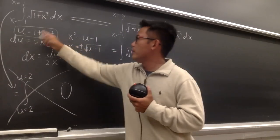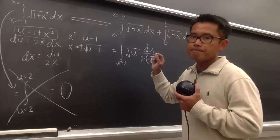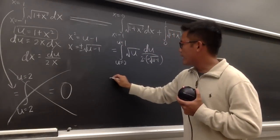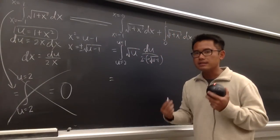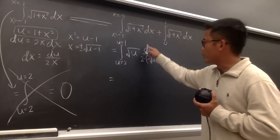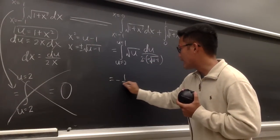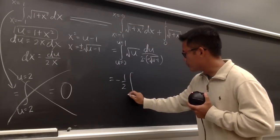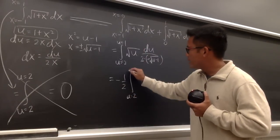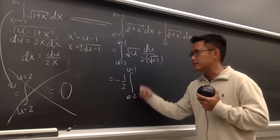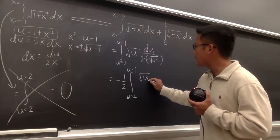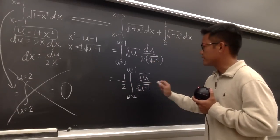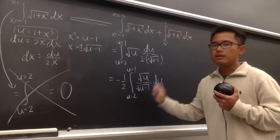Now fill in the limits. When x is negative 1, plug into u = 1 + x², you get u equal to 2. When x is equal to 0, you get u equal to 1. So we have the integral from u=2 to u=1. Clean things up: I have a negative and a 1/2, so take out negative 1/2. We get negative 1/2 times the integral from u=2 to u=1 of square root of u over square root of u minus 1 du.